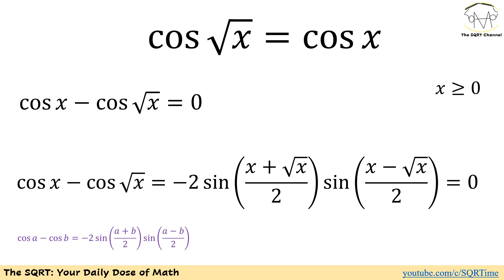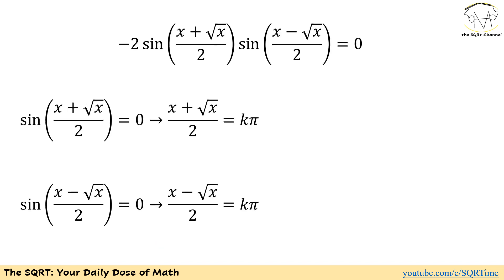Obviously, we can have the first one 0 or the second one or both of them. Let's try all those cases and see what we are going to get. If sine of x plus radical x over 2 equals to 0, then x plus radical x over 2 needs to be k times pi. k can be 0 or a positive integer here. On the other hand, if sine of x minus radical x over 2 is 0, then x minus radical x over 2 needs to be k times pi. Again, k needs to be a positive or 0 value.